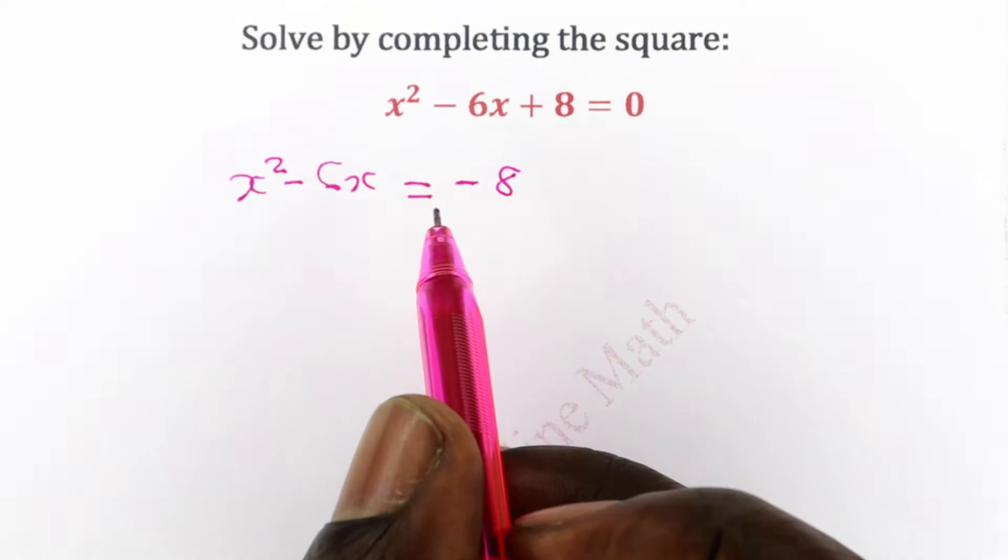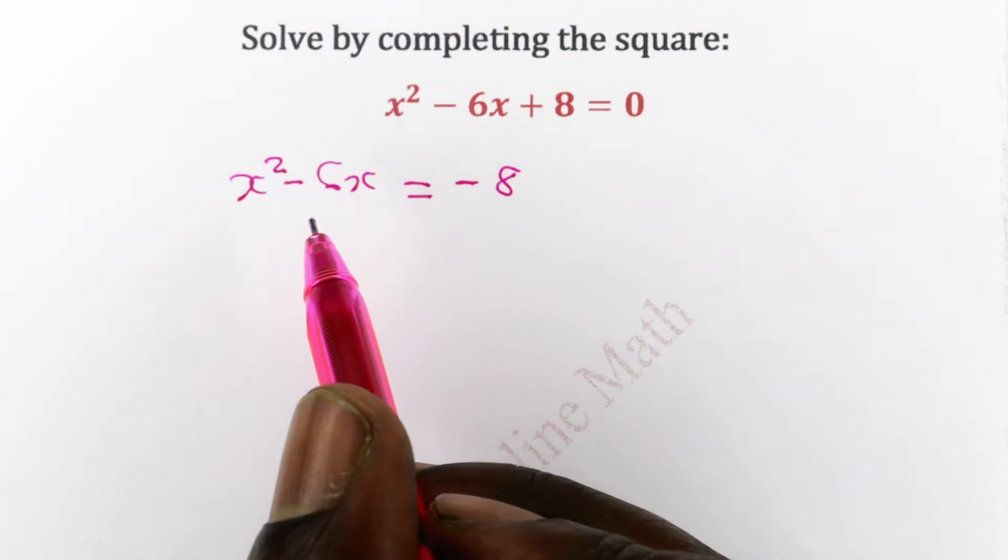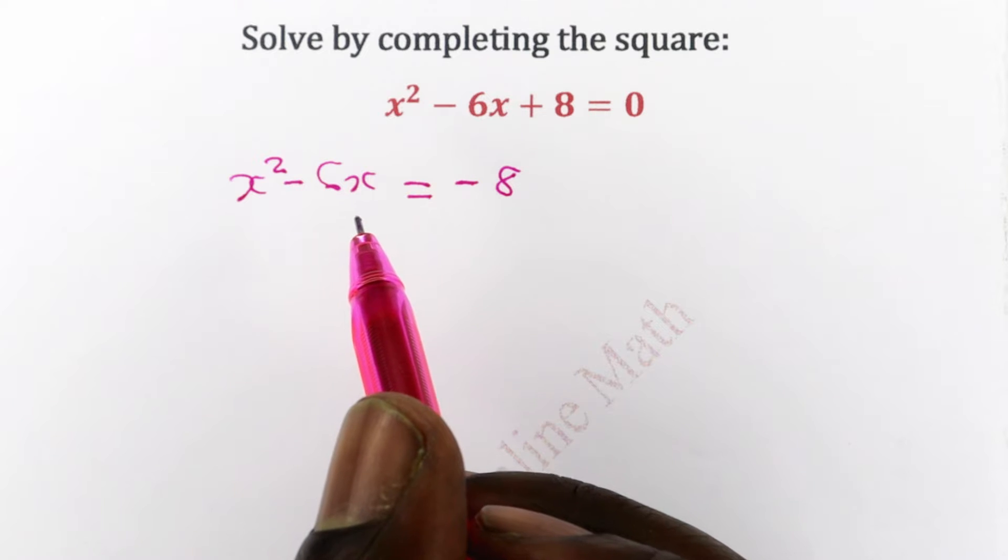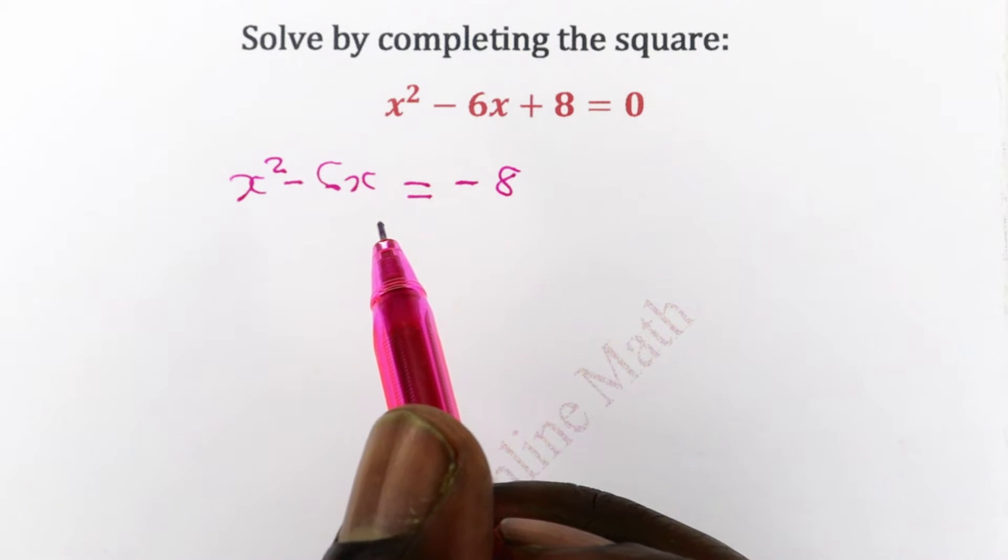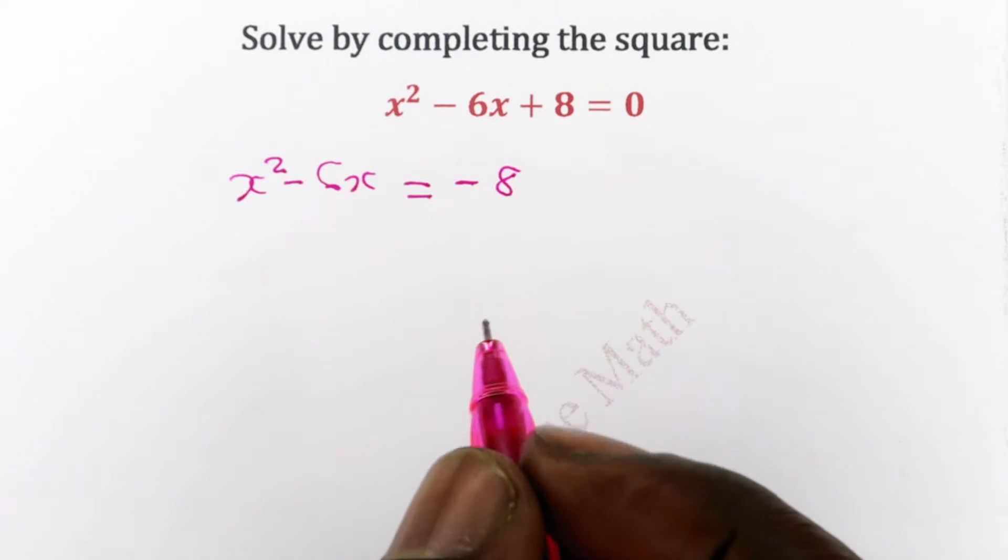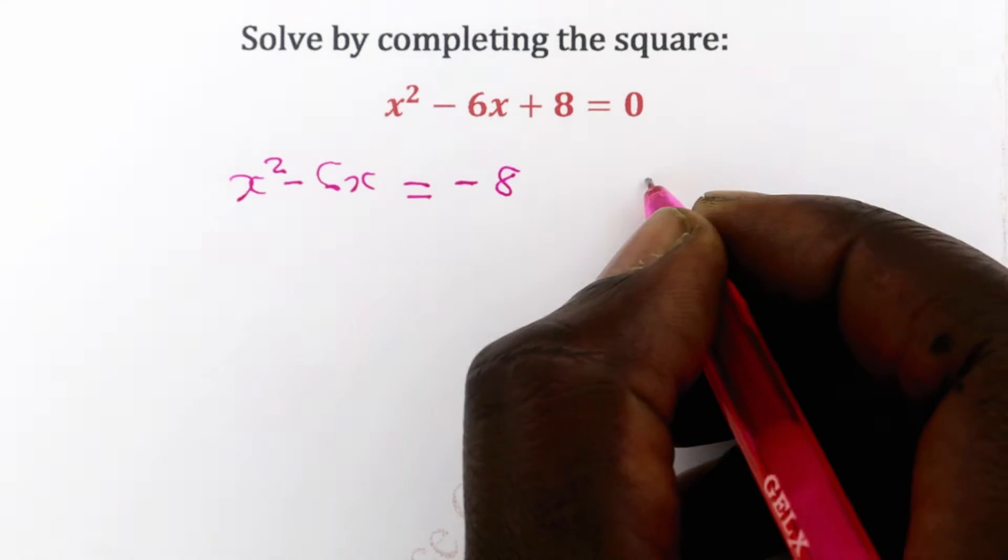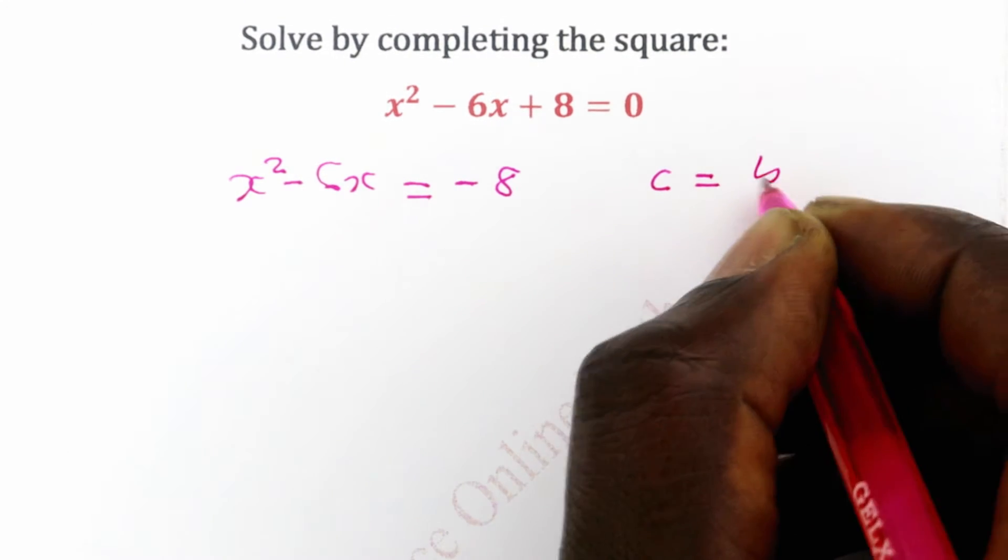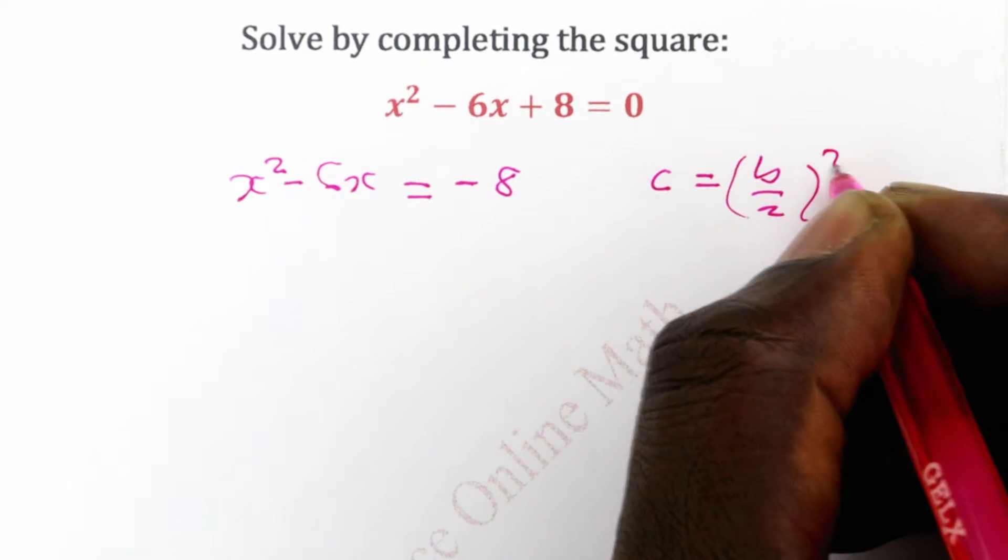The next thing to observe is that what we have on the left hand side is an incomplete square. So we have to complete it by introducing the missing component which is c. And we use the relationship that c is given by half of b squared.